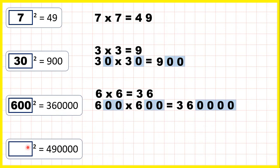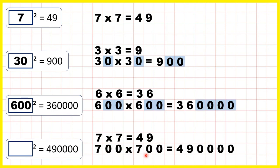Now for this next question, again we can see that 49 is a square number, because 7 times 7 is 49. So 700 times 700 is 490,000, because if we have 4 end zeros in a multiplication, we need 4 end zeros in the answer. So because 700 times 700 is 490,000, we can say that 700 squared is 490,000, or that the square root of 490,000 is 700.